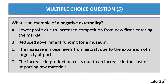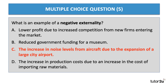Question five: what is an example of a negative externality from the four options given? The best answer is C — the noise levels from aircraft will be a negative externality due to the expansion of a large city airport.